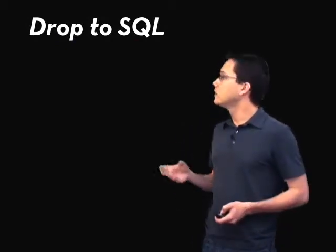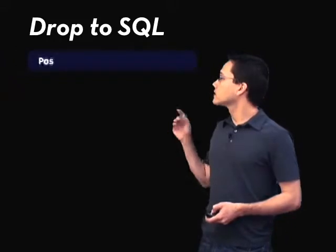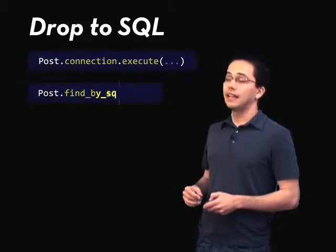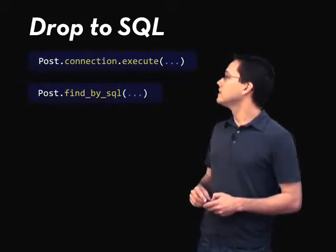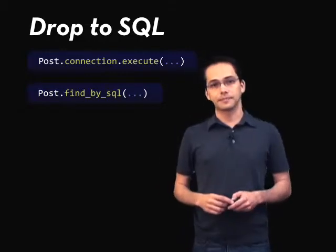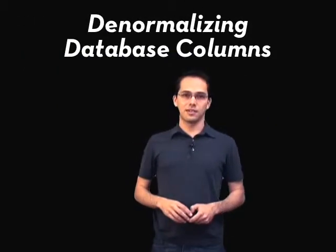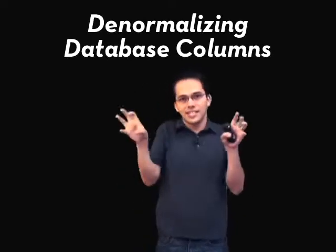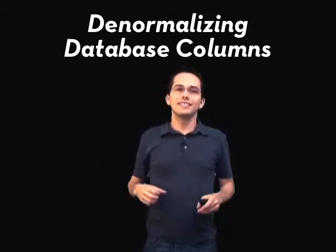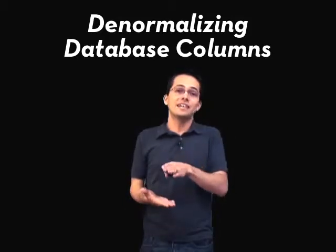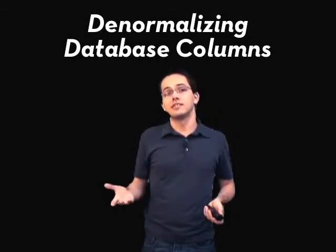Don't be afraid to drop to SQL if you need to really optimize a query. You can do this in two different ways: first, by doing a connection.execute, and secondly by doing a find_by_sql command. Also, there is no shame in denormalizing database columns. We have a very logical mind as programmers that we should isolate things into many different tables as they logically should be laid out. But if you need to for optimization, there's nothing wrong with flattening that data where you need to in order to get the speed that you need.